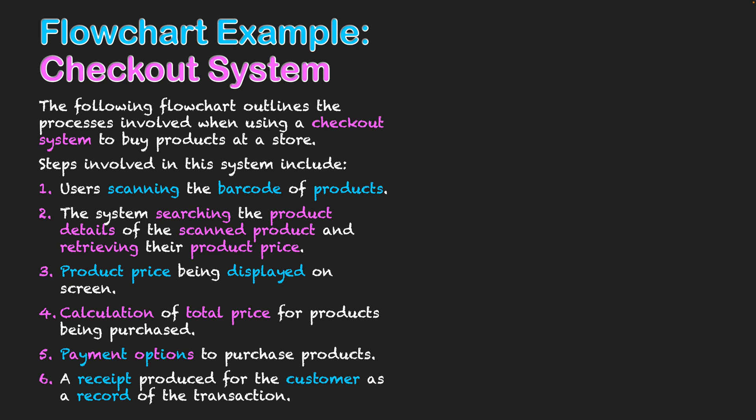So as you can see we've got six steps here. What I've tried to do is color code things as well. Everything written in blue is an input/output to highlight that I'll be using the input/output symbol in my flowchart. Words written in pink are there to reflect the processes taking place in this system, showing that I'll be using my process rectangle within my flowchart.